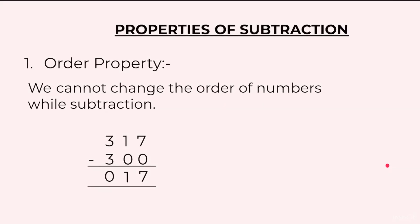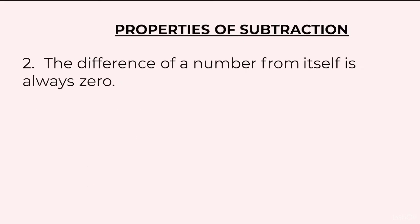Second property: the difference of a number from itself is always 0. Let us take the example 317 minus 317 will give us 0, similarly 8 minus 8 will give us 0. So this property says when you subtract the number from itself we get the answer as 0.